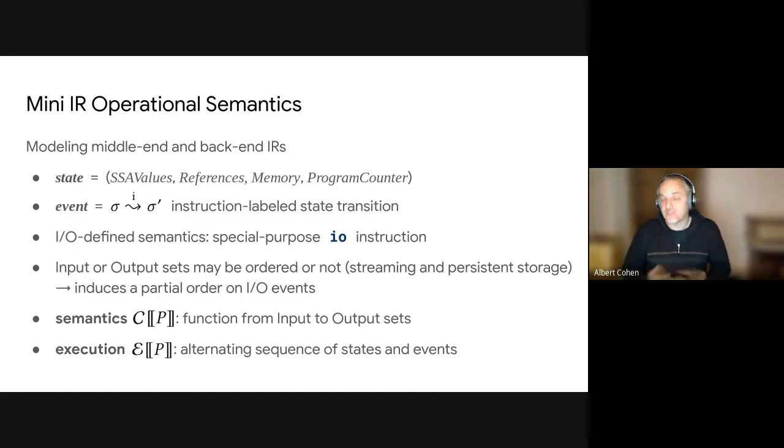And the semantics correctness is defined with respect to these input and output effects. And because of this ordering of effects on input sets or output sets, depending on the type of the input and output, we also induce the partial order on I/O events. So whenever we would talk about semantics correctness, we talk about preserving these I/O effects and also the partial ordering among the events. So the semantics defines the function as expected from input to output sets, and it also defines some kind of traces. So we call it an execution, which is an alternating sequence of state and events, and we are going to review what happens to an execution across program transformation.